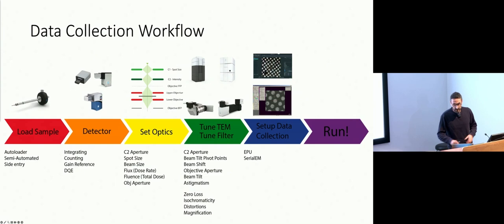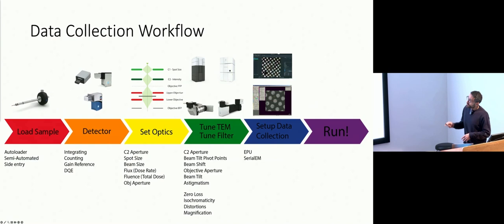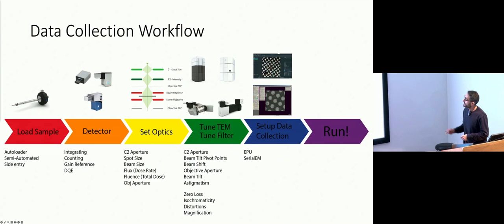Once we have a plan and we want to collect data, a data collection workflow generally looks like this and has six steps. You will be loading the samples — this depends on the type of system, whether an autoloader, a semi-automated system, or a side entry holder. Next, you'll decide the detector and which features to use, then the illumination — we call this setting optics. Then you'll tune the microscope and perhaps the energy filter, decide the software, and eventually press run. And if the microscope doesn't crash, you'll end up with a nice and beautiful dataset the day after.